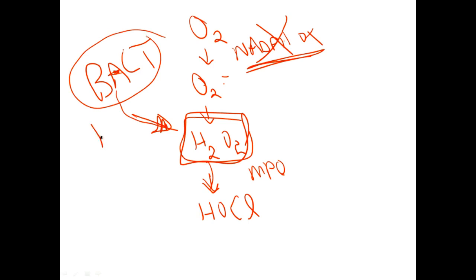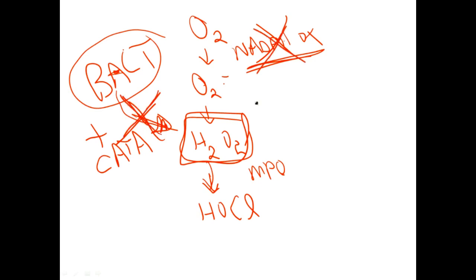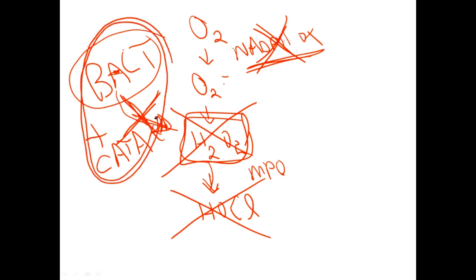However, there are some bacteria that also produce catalase, and catalase destroys hydrogen peroxide. So if a bacterium produces catalase, that alternative pathway gets knocked out too. If both pathways are knocked out, bleach can no longer be produced. That's why we only get infections with catalase-positive bacteria — because it's with those catalase-positive bacteria that there is no longer any source of hydrogen peroxide.